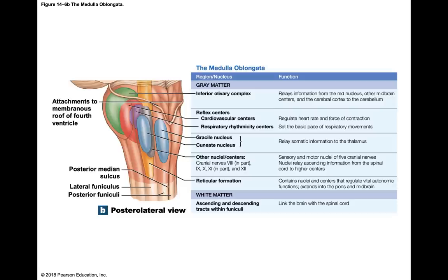Now we'll go through each area of the brainstem, then the diencephalon, and then the cerebrum. Starting with the most inferior end of the brainstem — the medulla oblongata — it has three groups of nuclei: one group controls visceral functions called the reflex centers, one group is the sensory and motor nuclei, and the last is a relay station between the brain and the spinal cord.